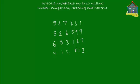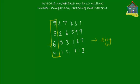Each of these four numbers has six digits, so we cannot compare based on number of digits. Instead, we start with the leftmost digits — the digits in the hundred thousands place. Which one is the biggest here? It's quite obvious that six is the biggest. So 683127 becomes the biggest number. We write that down — this is the biggest.